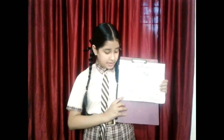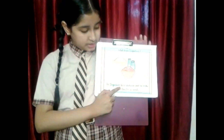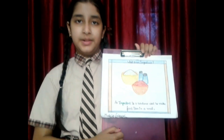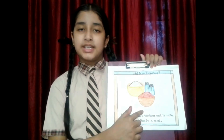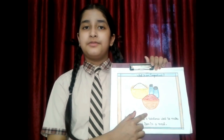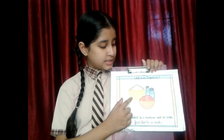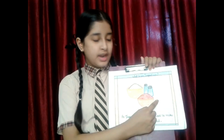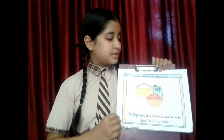Each food item that we eat is made up of different types of ingredients. What are ingredients? An ingredient is a substance used to make a food item in a meal. Here you can see some ingredients in the flash card — this is salt, red chili powder and some other spices.